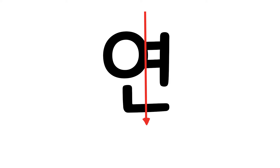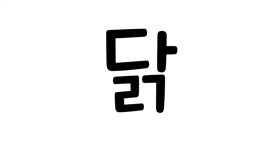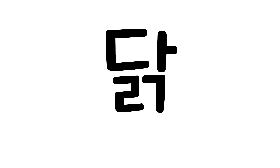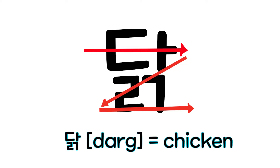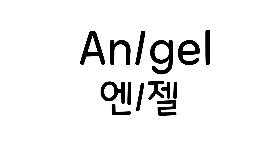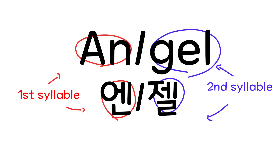Then, how do you type DAG? It's actually good to understand how it sounds and how a syllable consists of a consonant, vowel, consonant order. So you type DAG in this order. The corresponding alphabet is D-A-R-G. In reverse, you can also type ANGEL in Korean as well.